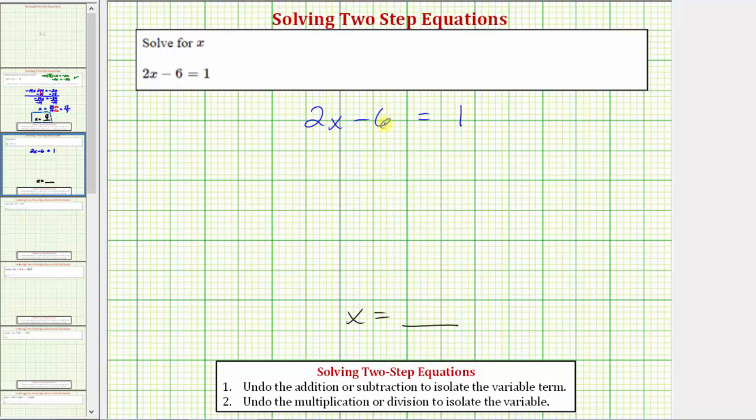To solve a two-step equation, step one is always to undo the addition or subtraction to isolate the variable term, and step two is to undo the multiplication or division to isolate the variable or solve for the variable.